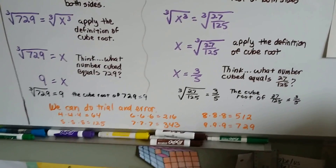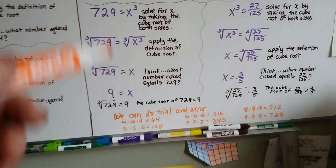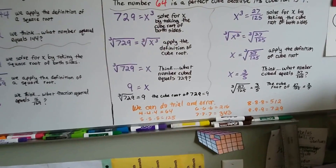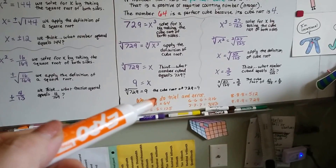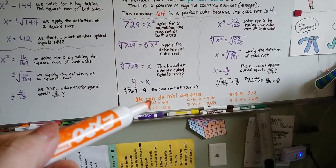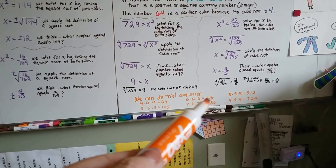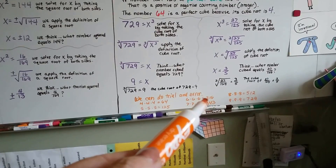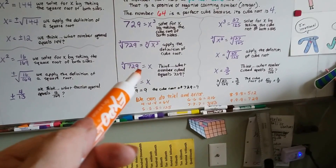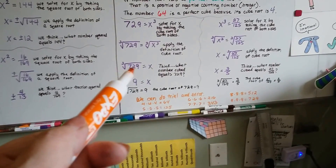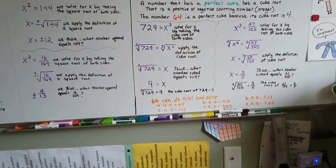So don't be scared to do trial and error. If you have a number, try doing 6 times 6 is 36 and then multiply 36 times 6. See if it's big enough, and if it's way off — this is only 216 — you know you have to jump way higher. Try 8 or 9 and see if that would work.